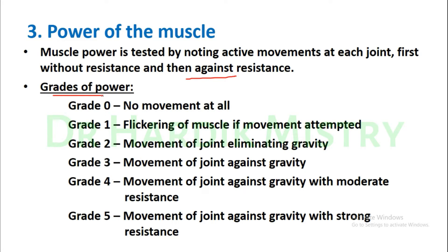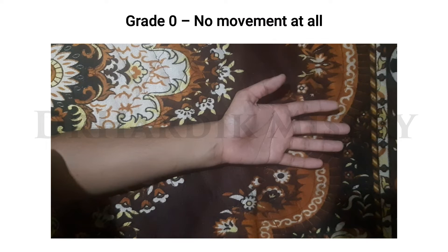Grade zero: no movement at all. Grade one: flickering of muscle if movement is attempted. Grade two: movement of joint eliminating gravity. Grade three: movement of joint against gravity. Grade four: movement of joint against gravity with moderate resistance.